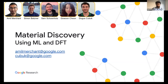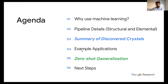Hi, nice to meet everyone. So a little bit about the talk for today — we're going to go through six main points. I'll be covering the first three: why use machine learning, pipeline details, and a summary of our discovered crystals. And Doj will take over for four through six.